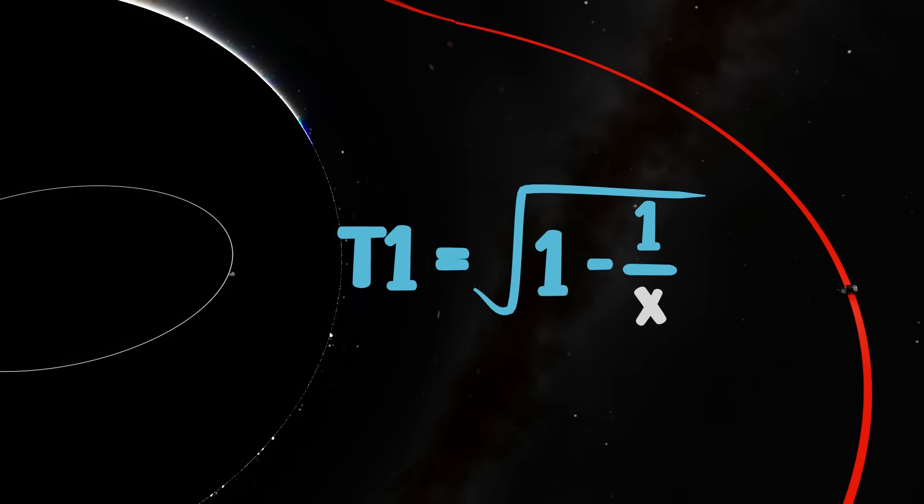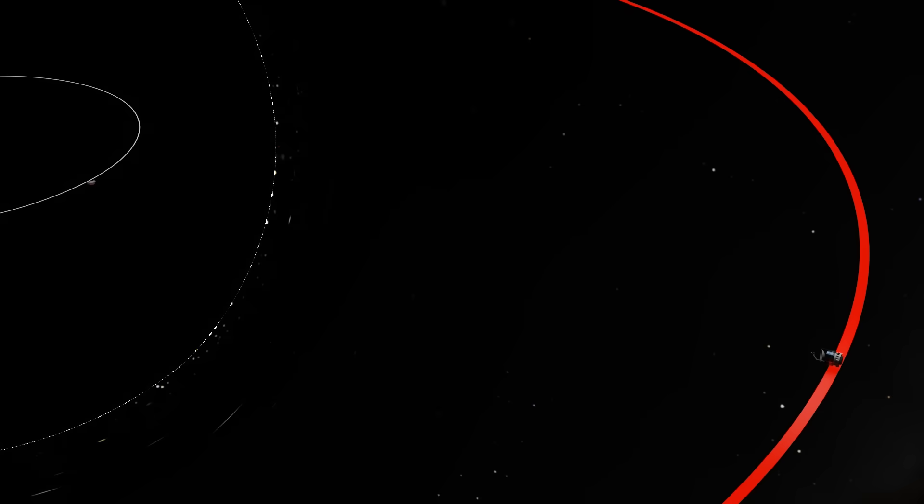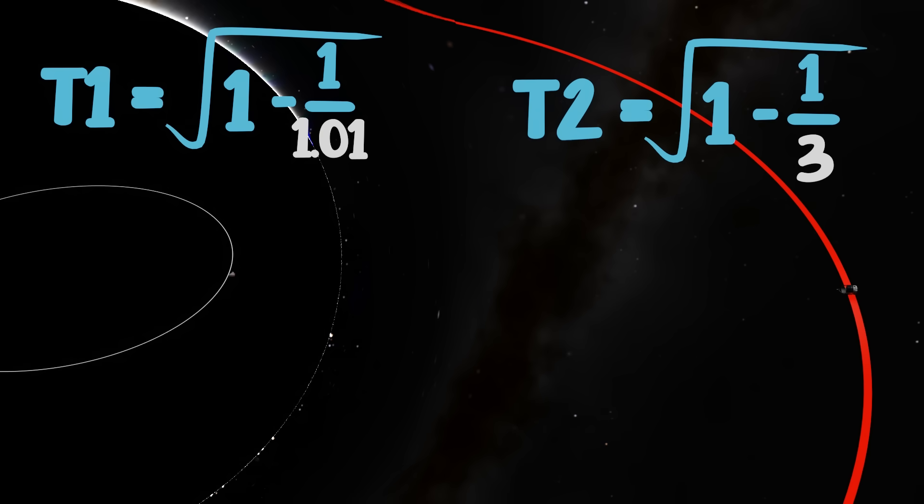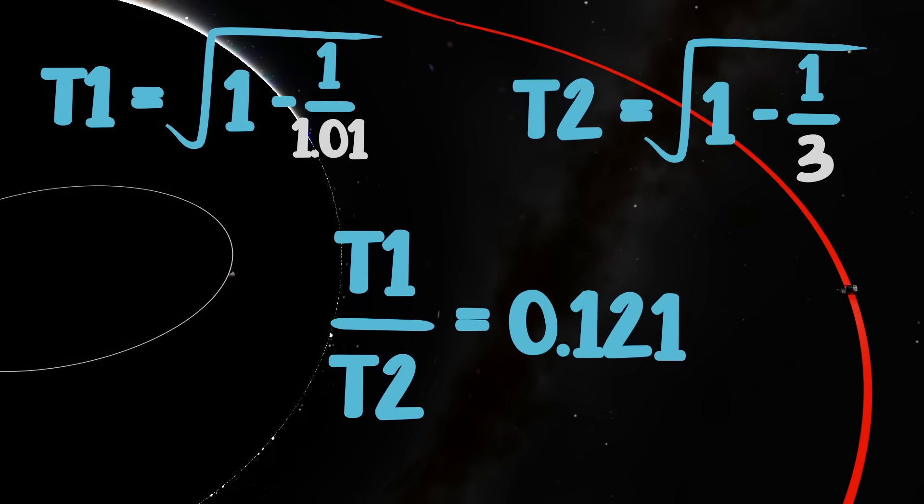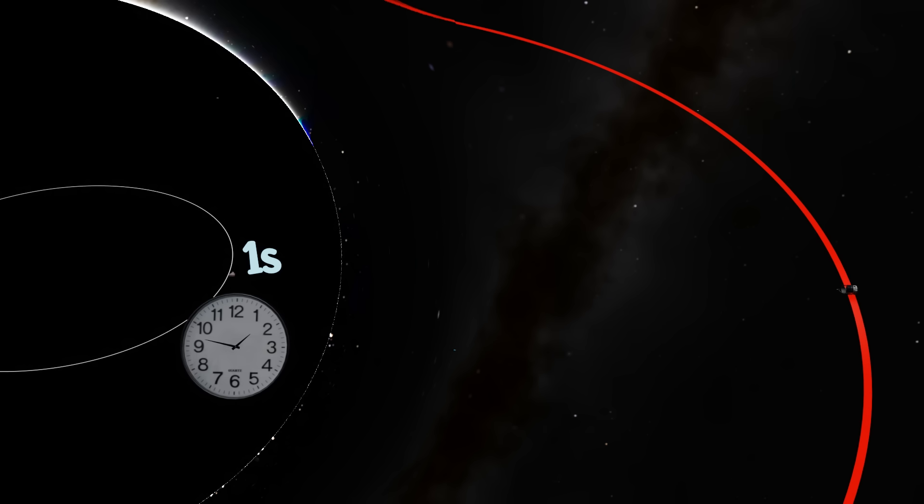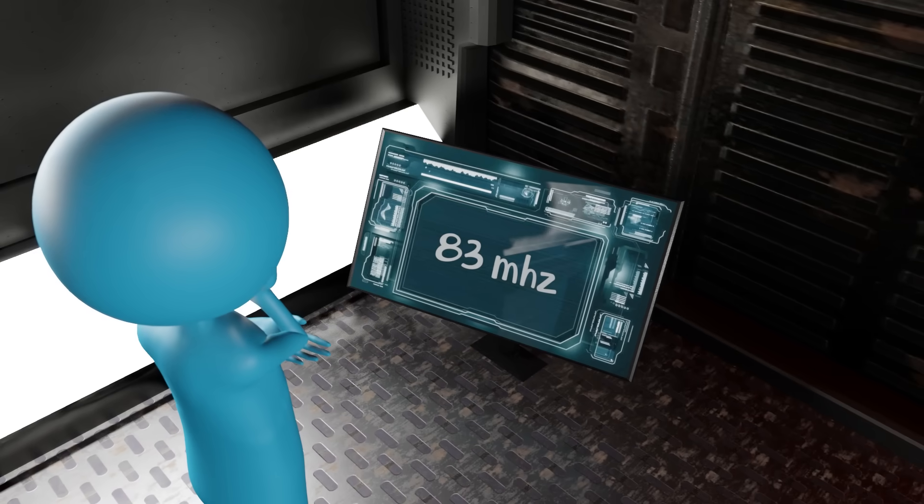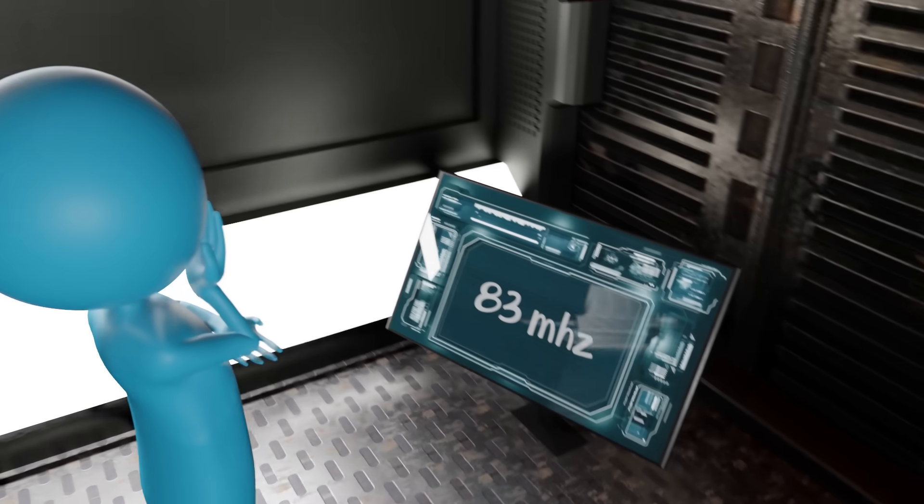The equation for time dilation is this, where x is the distance in Schwarzschild radii from the Singularity and the reference frame is of someone very far from the black hole. Our orbiting probe is not very far from the black hole, so we need to calculate the time for both of these. We find that at 1.01 Schwarzschild radii, our time is running at 12% the rate of our probe, so for every second that passes here, 8.3 seconds passes for it. When we measure the emitted radio wave frequency, we see that it's jumped to 83 megahertz. Time is indeed running slower here relative to those further away.